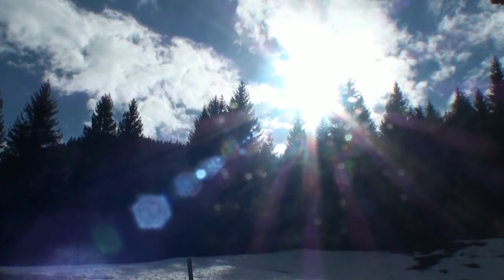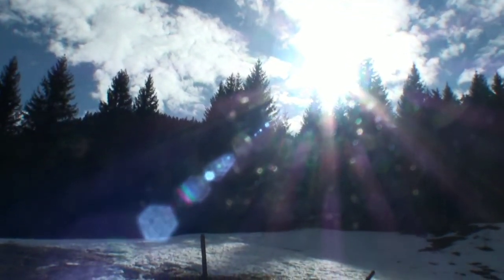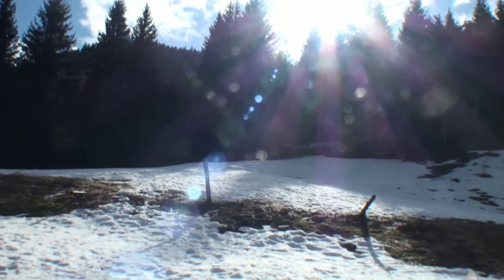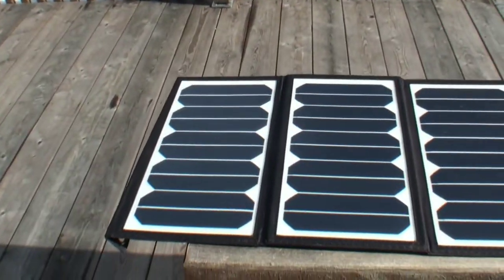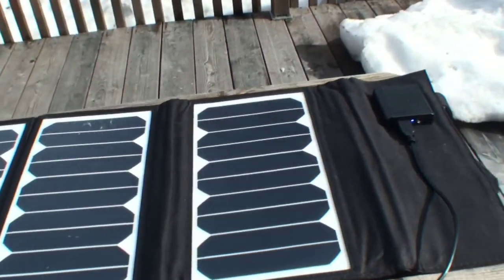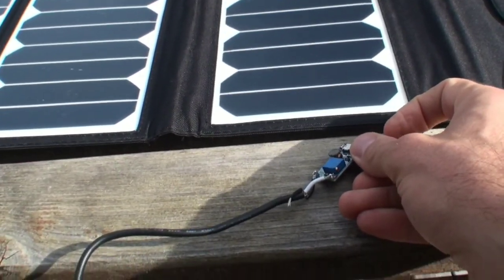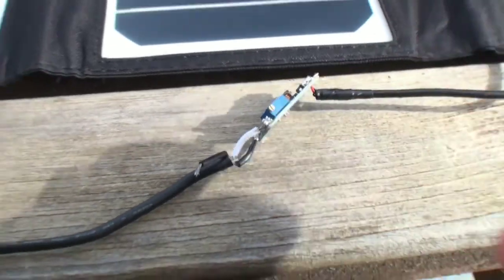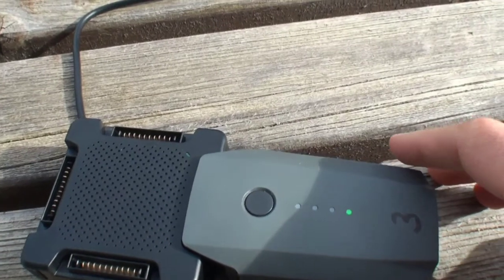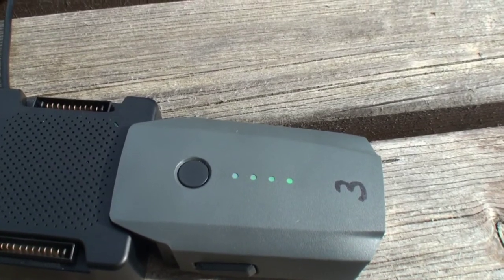Now the test under real conditions. The sun is burning down like hell in the Austrian Alps. Here the solar panel. The connection. Here the step up converter. And here the charging device with the charging Mavic Pro battery.